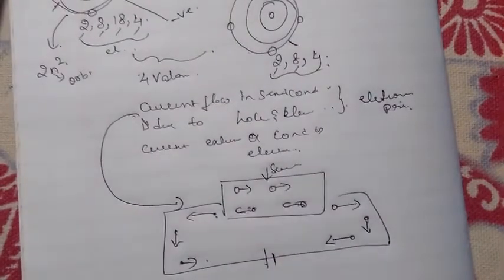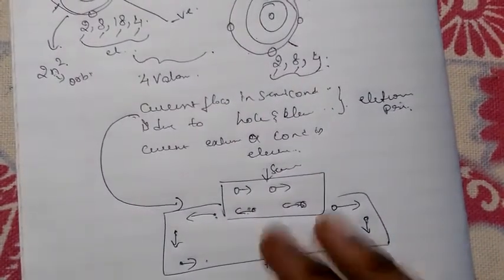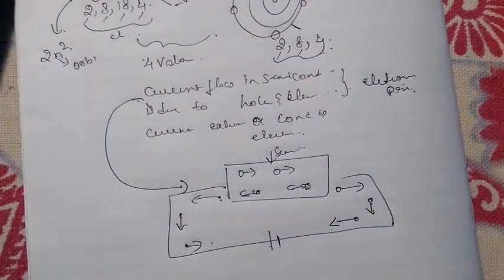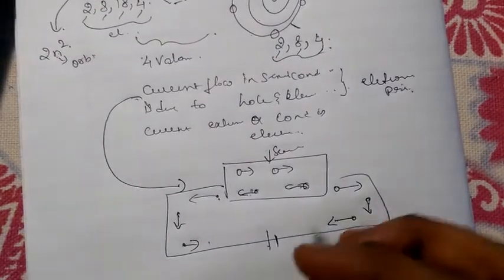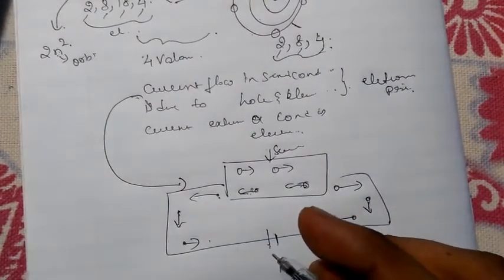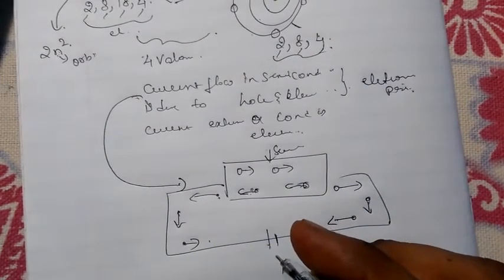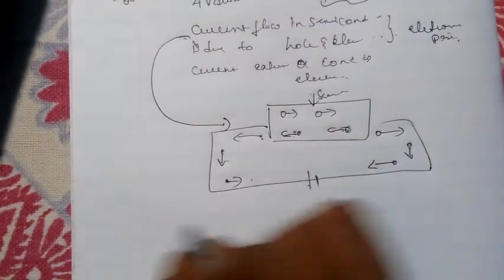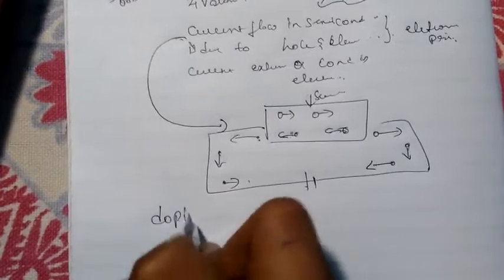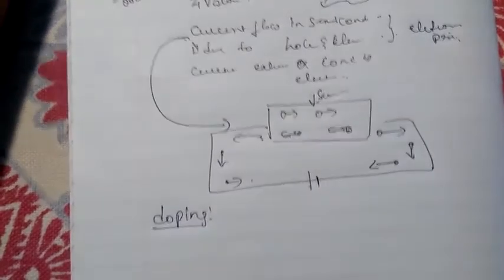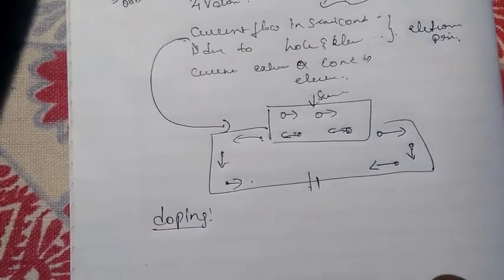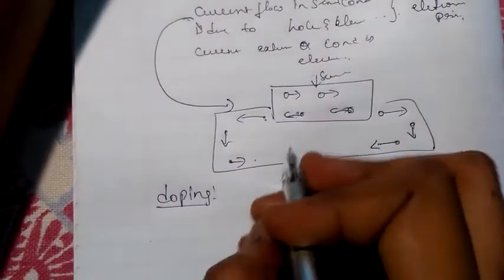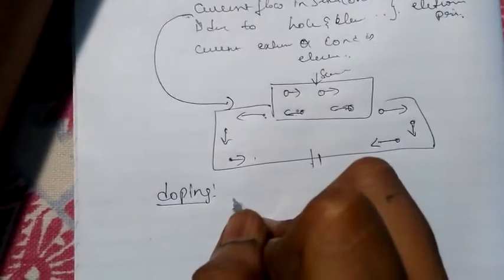The pure form of semiconductor is known as intrinsic semiconductor. When impurities are added to a pure semiconductor material, it is known as extrinsic semiconductor. The adding of impurity is known as doping — that is, adding impurity to the pure semiconductor material.